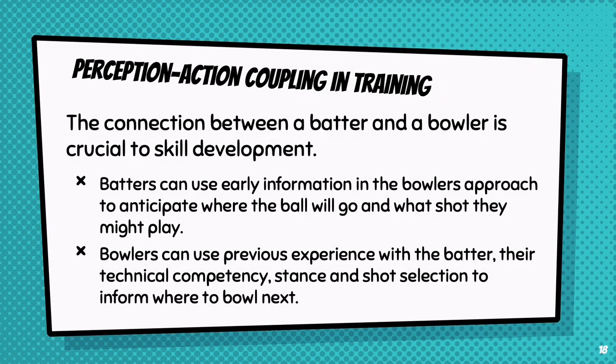What this means for our training design is that the connection between the bowler and the batter is crucial for skill development. We know that batters can pick up early information in the bowler's approach to anticipate where the ball might land, then use this information to inform the shot they might play. Bowlers also use information from the batter — like technical competency, stance, and shot selection — to inform where they bowl next. This is difficult to recognize if you train by bowling one ball every two minutes.